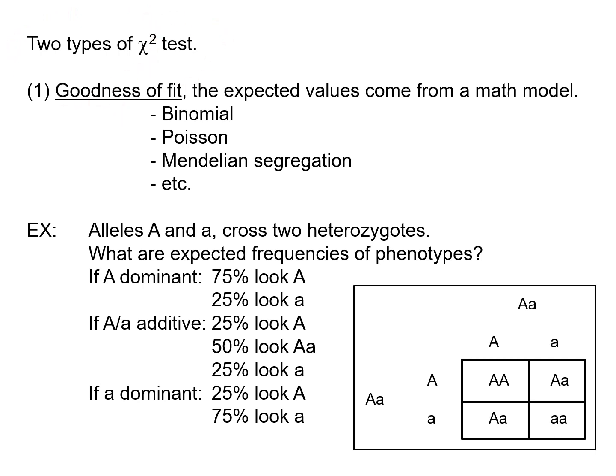In a goodness of fit test the expected values come from some sort of mathematical model, like a binomial distribution model — that was the football example from the previous lecture. The Poisson distribution can also be used to make predictions. And you may not have thought about it this way, but Mendelian segregation and Punnett squares are actually mathematical models that make predictions about the proportions or frequencies of offspring when you have matings between individuals.